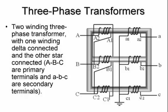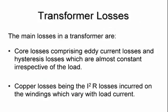For a three-phase transformer, we have a star-connected primary with capital letters ABC, and on the secondary side small letters ABC. In this example, it is delta connected on the primary side and star connected on the secondary side, with a neutral connection to ground.